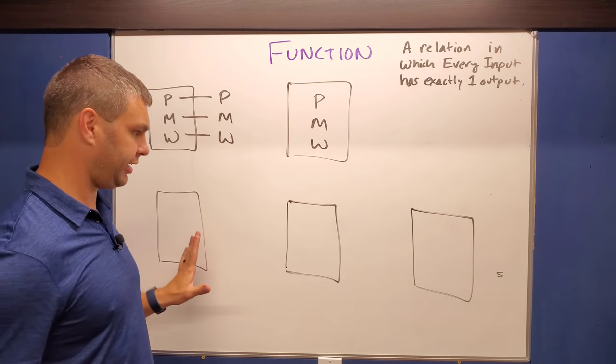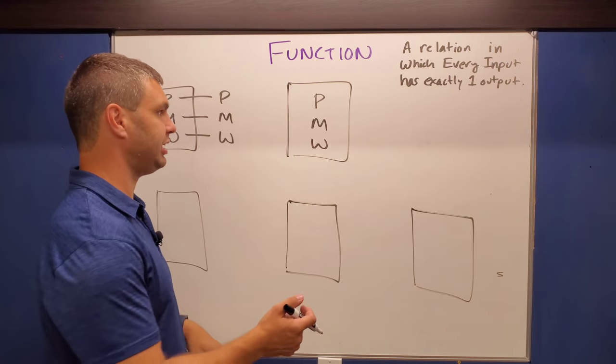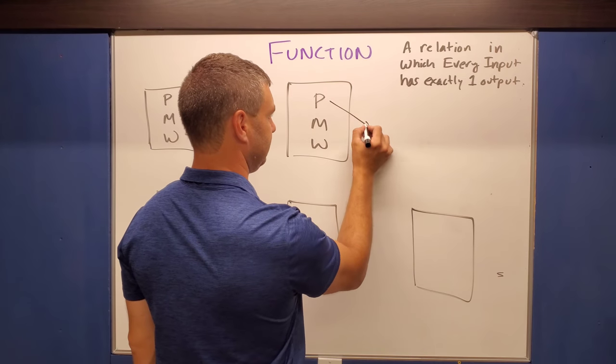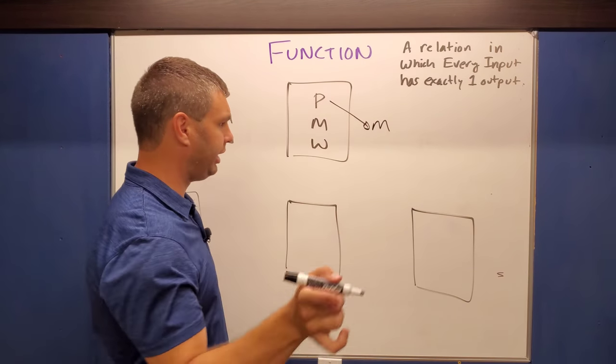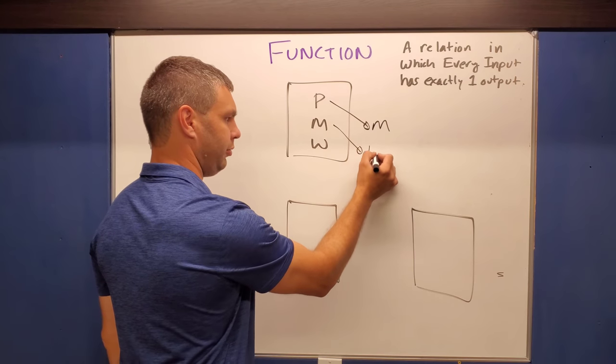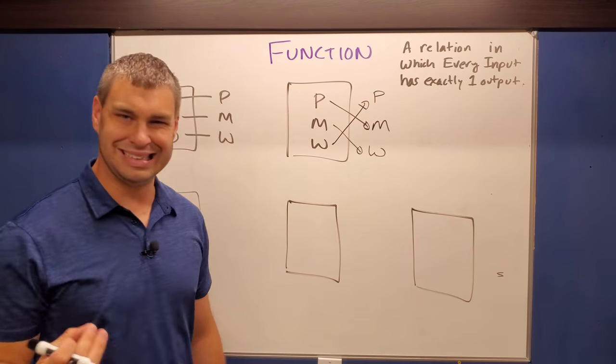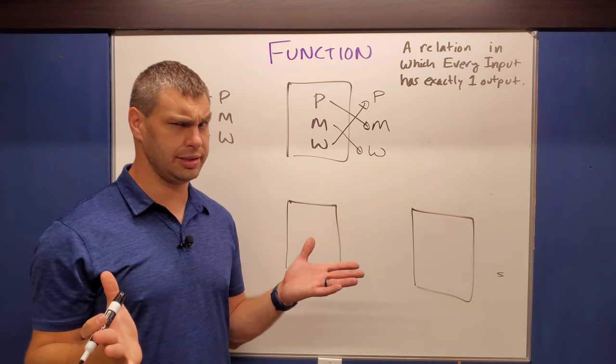But now I'm going to think of a few other types. Okay. So for example, what about this one? What if when I hit the Pepsi, I actually get a Mountain Dew? And when I hit the Mountain Dew, I actually get a water. And when I hit the water, I get a Pepsi. Is this a function? Think yes or no on your own here.